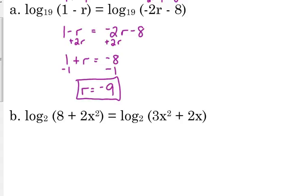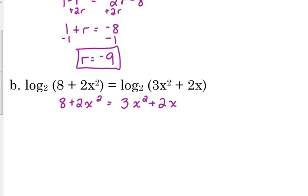Example B, we've got the same situation. We've got log base 2 on the left side, we've got log base 2 on the right side, so we can just set what's inside those logarithms equal to each other. 8 plus 2x squared is equal to 3x squared plus 2x. Can't forget what we've learned in the past. That's a quadratic equation. We've got x squares, so quadratic equations have to be equal to what? Zero.